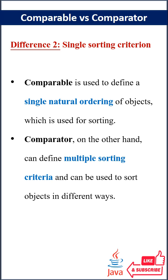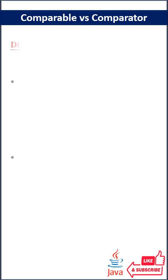Second difference, in terms of sorting criterion. Comparable is used to define a single natural ordering of objects, which is used for sorting. Comparator, on the other hand, can define multiple sorting criteria and can be used to sort objects in different ways.